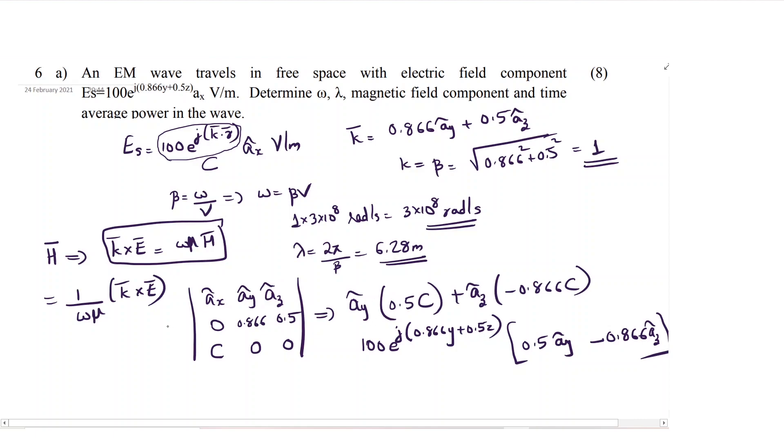And this, again there is 1 by omega mu part. This divided by omega, you know that it is 3 into 10 raised to 8 into mu. Mu will be 4 pi into 10 raised to minus 7.